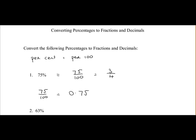So when converting a percentage to a decimal, just divide by 100. In this case we get 0.75. Our next example is 63%, so as a fraction that's 63 per 100, so 63 over 100.